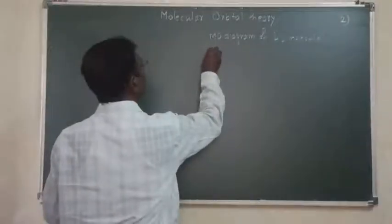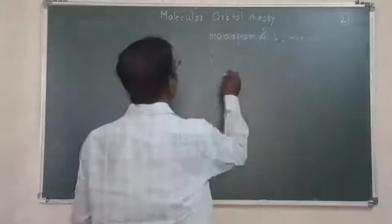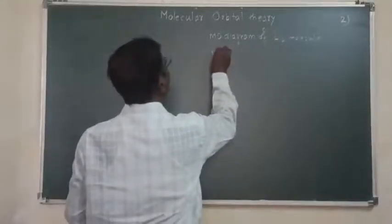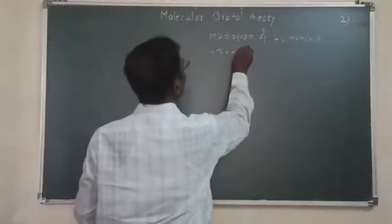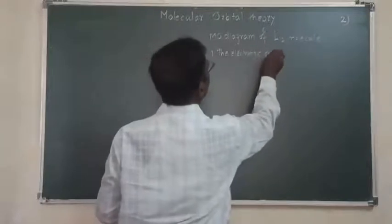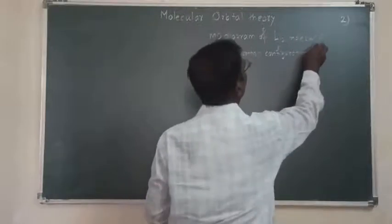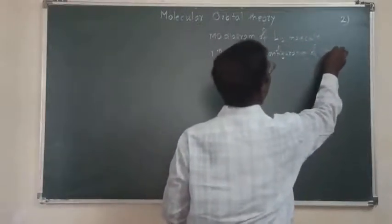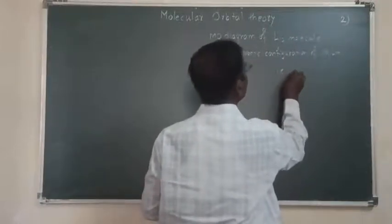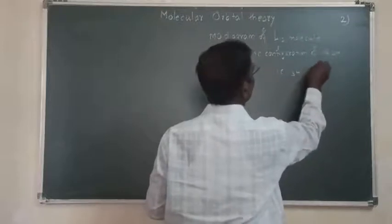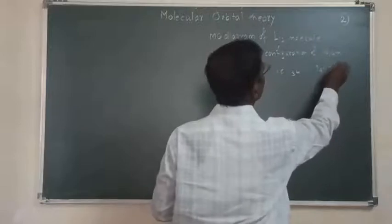The first part is the electronic configuration of Lithium. The atomic number of Lithium is 3. Therefore, the electronic configuration is 1s² and 2s¹.